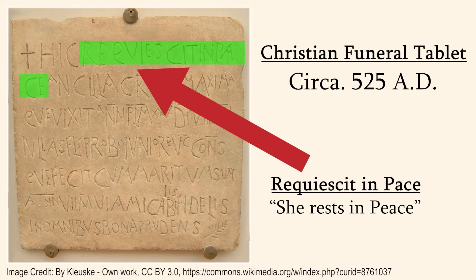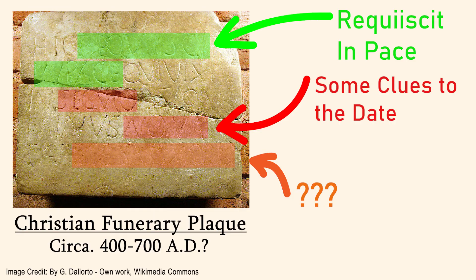A form of Requiescat in pace is seen on a Christian funerary tablet dating to around 525 AD. Here is another, which was found at the San Giustorgiorgio Church in Milan. The exact date is unknown, but appears to be somewhere between 400 to 700 AD, and the month appears to be somewhere between August and October in today's calendar. But with all the cracks and crunchy resolution, it's hard to tell.